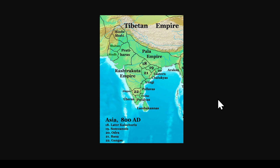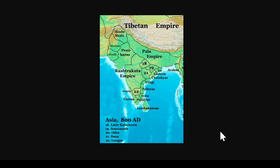Spengler faces the same problem with respect to China, and Toynbee makes the same mistakes in analyzing China as he made with India. Both China and India have similar timelines — both getting going around 1500 BC, both creating their first universal states at roughly the same time: Ashoka around 269 BC and Qin Shi Huangdi around 220 BC. If we revised Spengler's model, what he should have done was make it a 2000-year timeline instead of a 1000-year timeline.